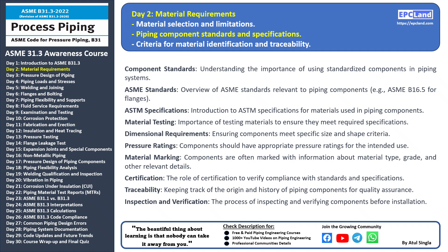Component standards form the backbone of a reliable piping system. These standards ensure that the components we use — like flanges, valves, and fittings — meet specific requirements for quality, performance, and safety. One set of standards is provided by ASME, the American Society of Mechanical Engineers. ASME has developed various standards that govern different aspects of piping components. For example, ASME B16.5 specifies the dimensions and pressure ratings for flanges.